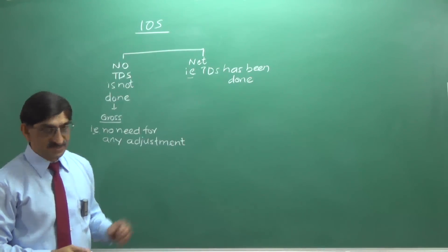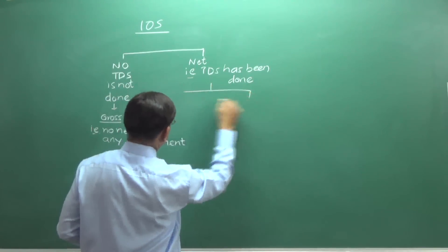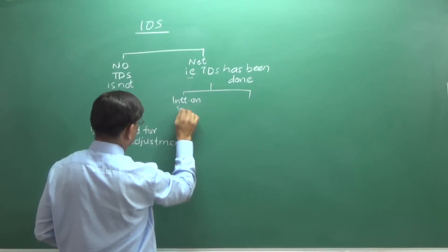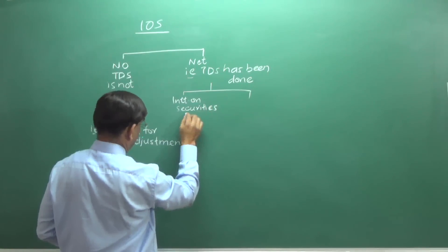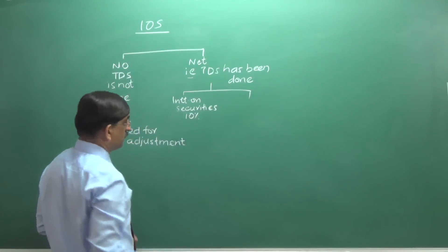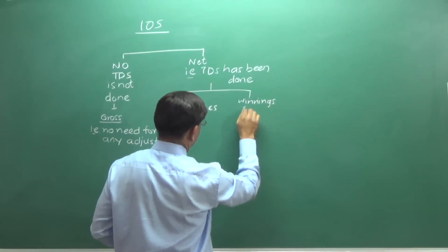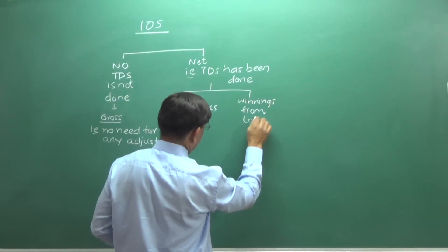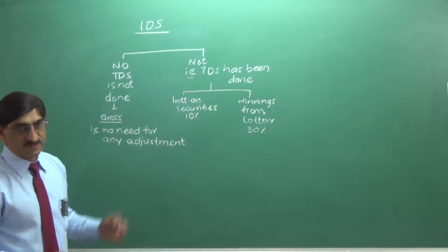In case of interest on securities, TDS would have been done at the rate of 10%. In case of winnings from lotteries, 30% TDS would have been done. So, we'll have to gross them up.